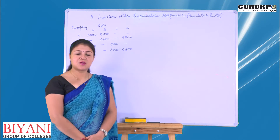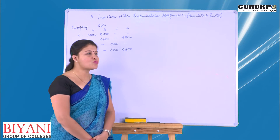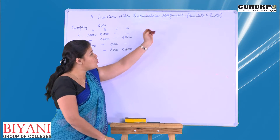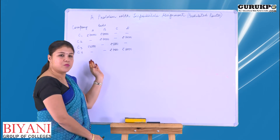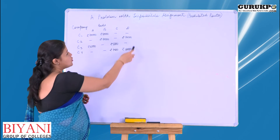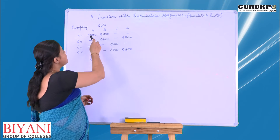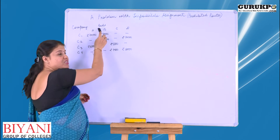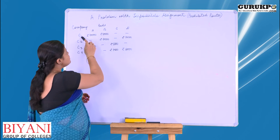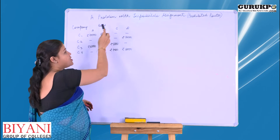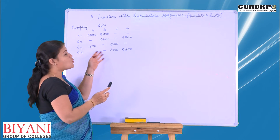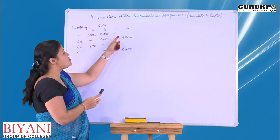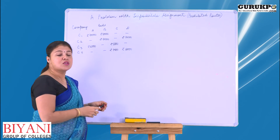The topic which I am going to discuss today is how to solve an assignment problem with impossible assignments, that is prohibited routes. Here is the problem given to us: the cost from company C1 to bid A is rupees 7000, from C1 to bid B is 8000, and so on. These are the costs, and these are the places or sales where no assignment is given to us.